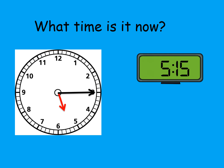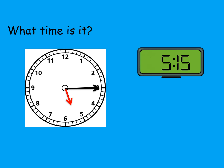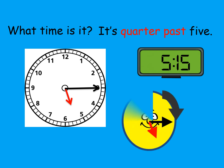What time is it? It's quarter past 5. It means 5 o'clock and then 15 minutes more — 15 minutes have already passed after 5 o'clock. It's quarter past 5.